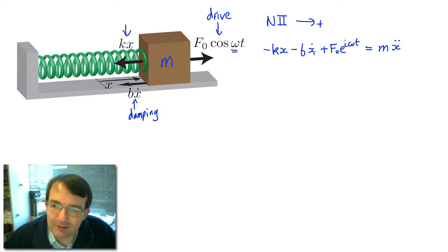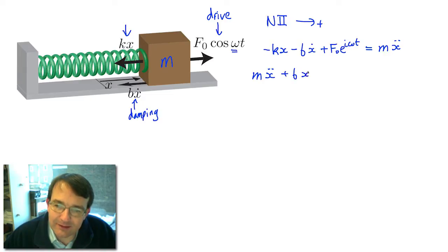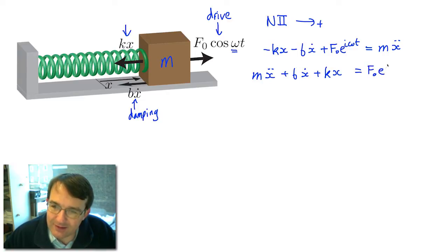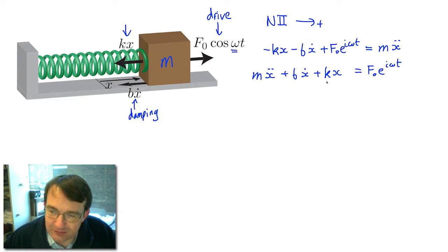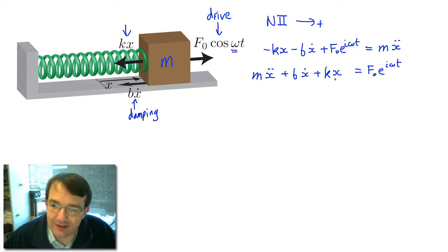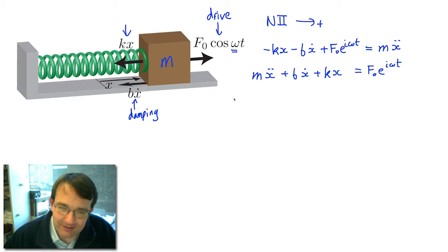Collecting all x terms on one side gives: mẍ + bẋ + kx = f₀·e^(iωt). This is the Newton's second law equation, and we need to solve for x as a function of t. To do that, just like with the damping case, we introduce two quantities: ω₀ and ζ.